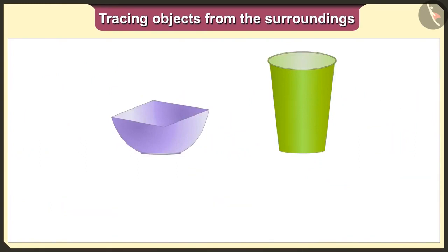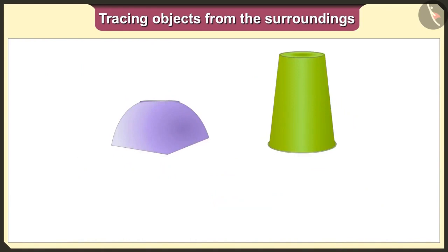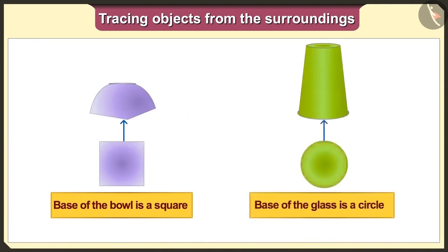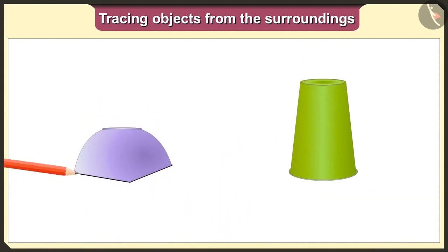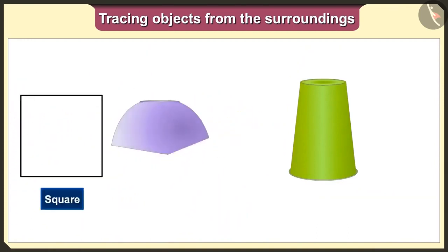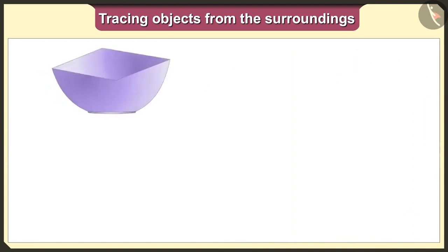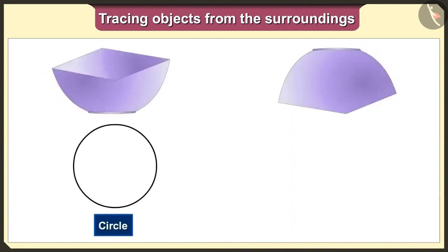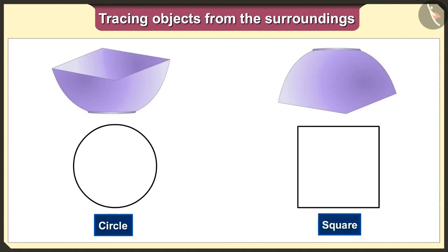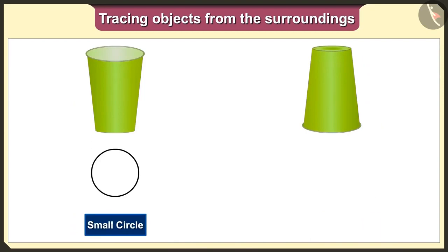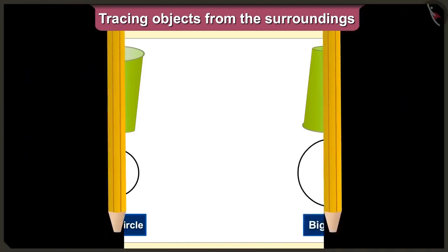Now if we keep the bowl and glass upside down, then the base of the bowl is a square and the base of the glass is a circle. If we keep the bowl facing downward and trace it, we will get the circle shape. So if we keep the bowl straight and trace it we get circle, and upside down also gives circle. If we keep the glass straight we get a small circle, and upside down we get a bigger circle.